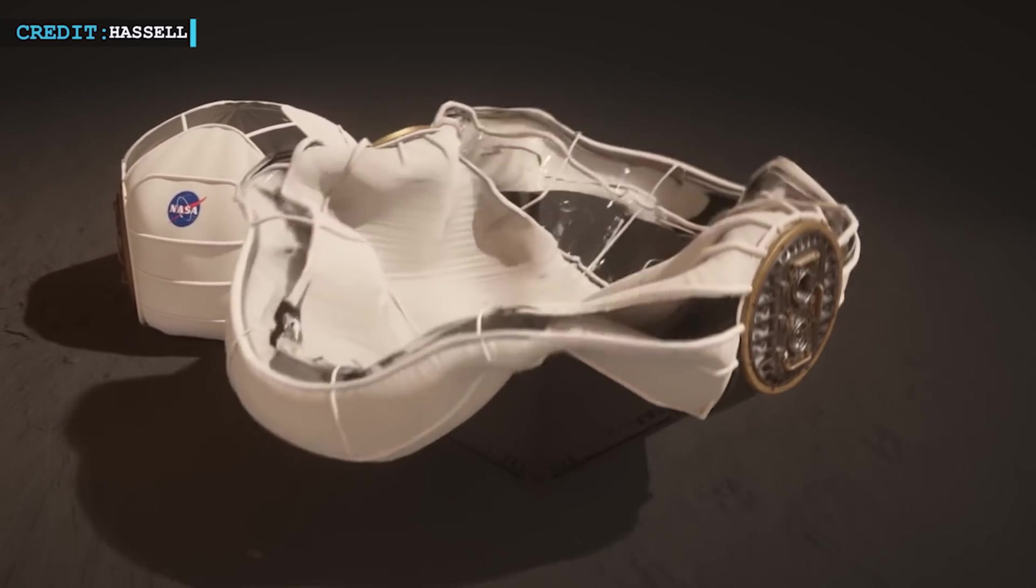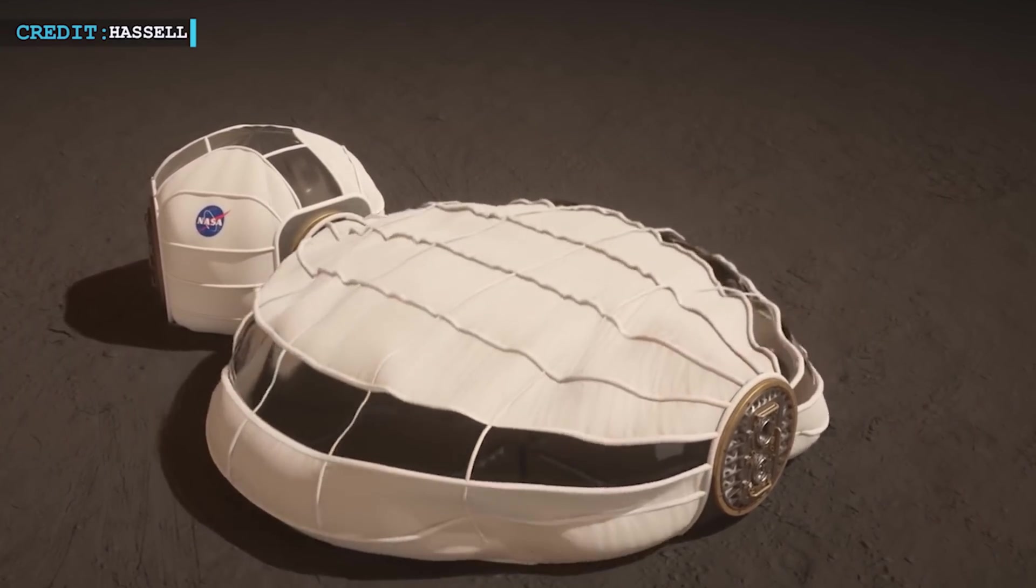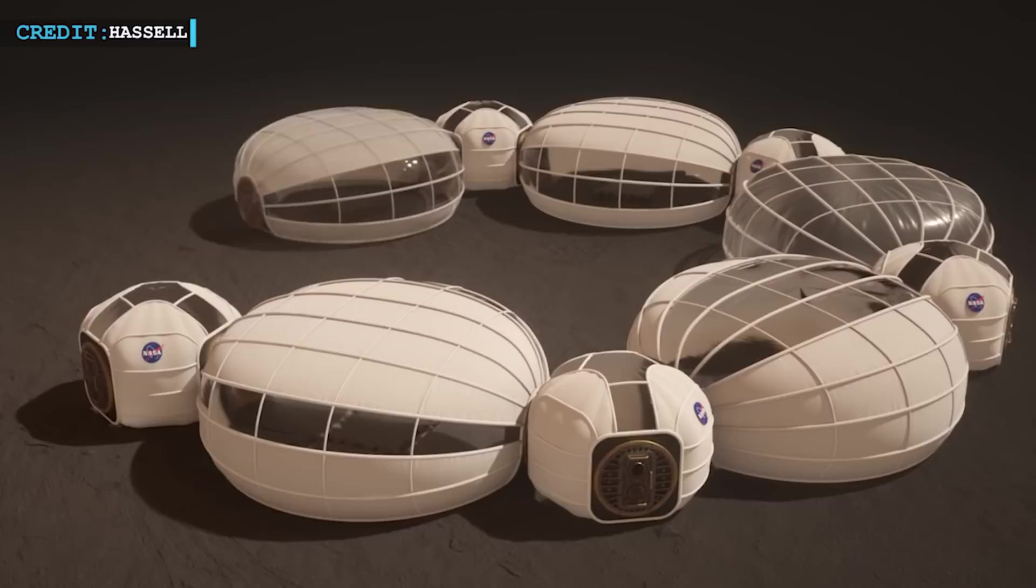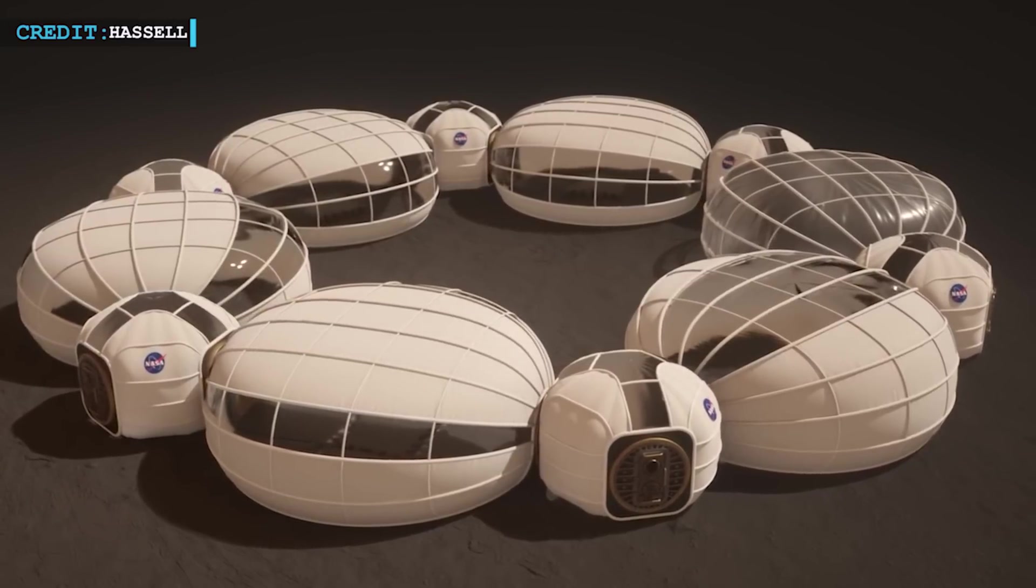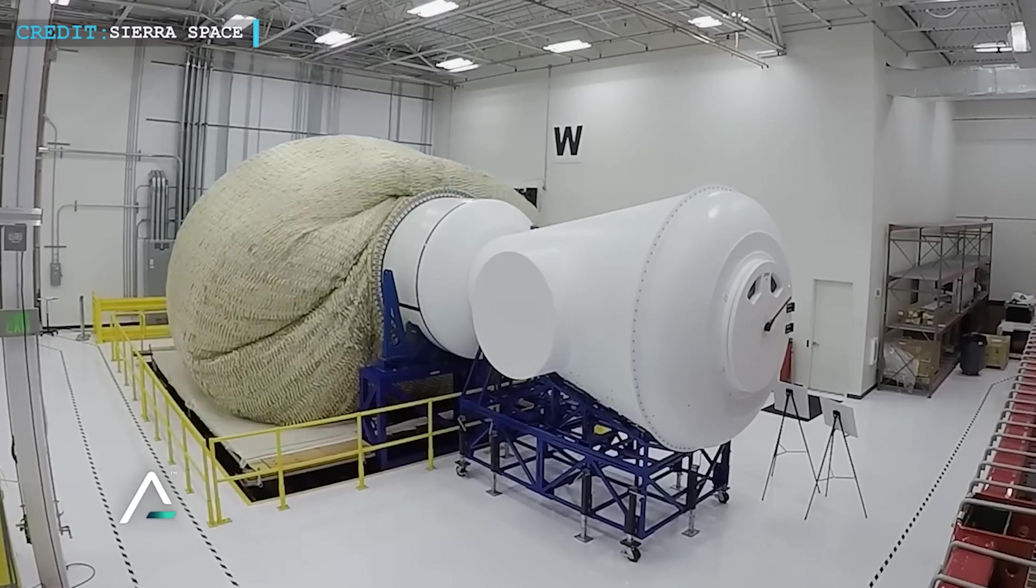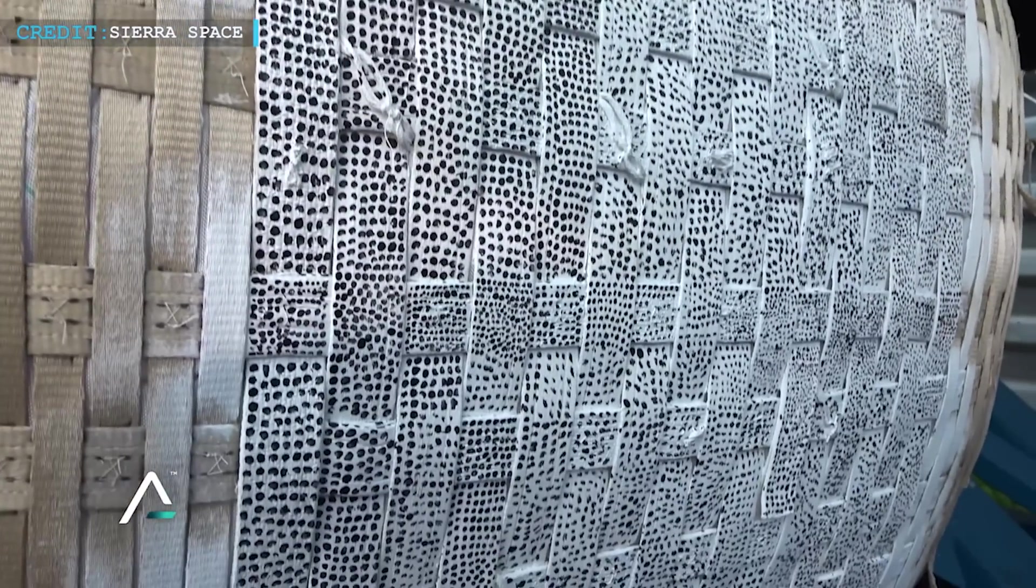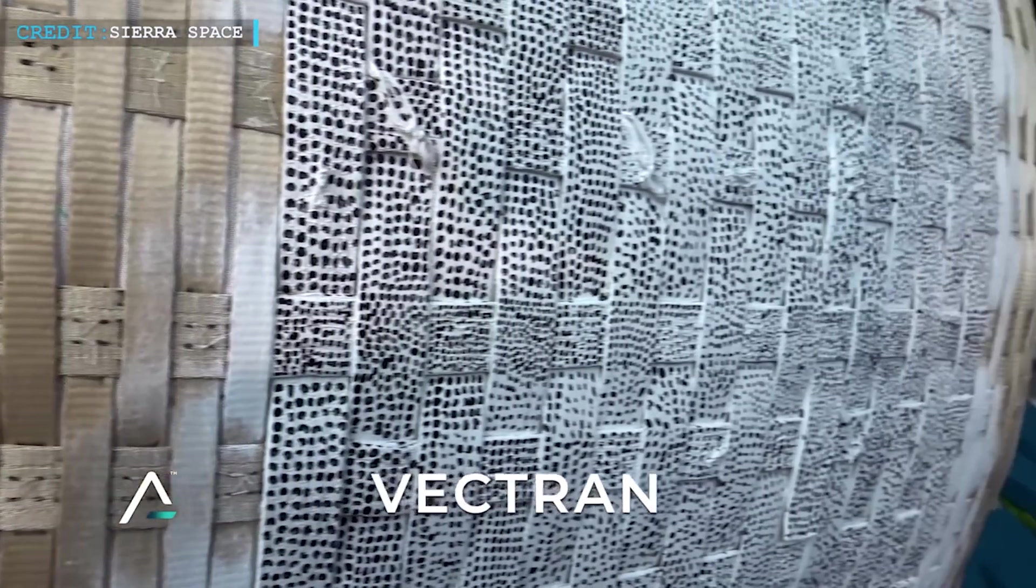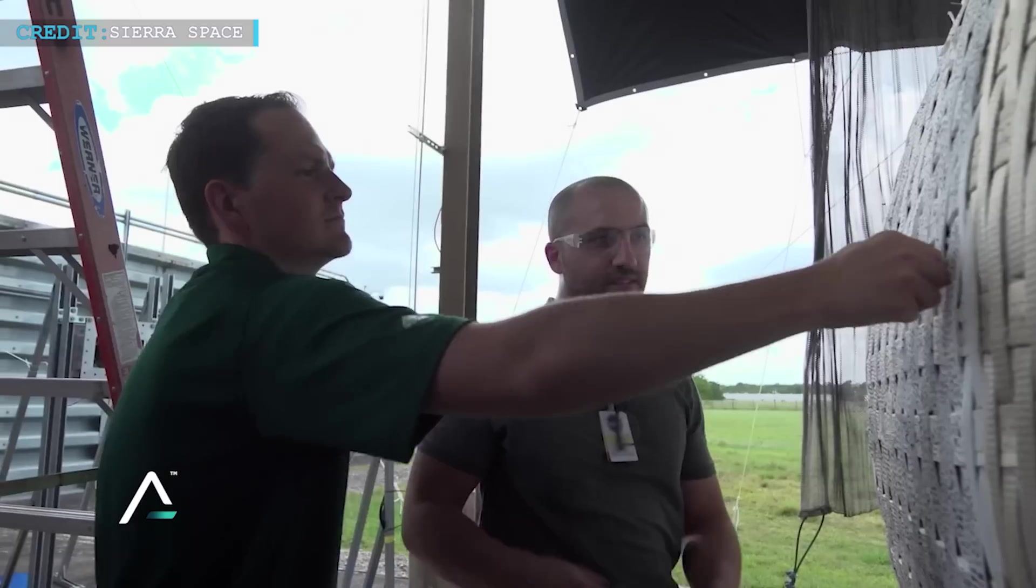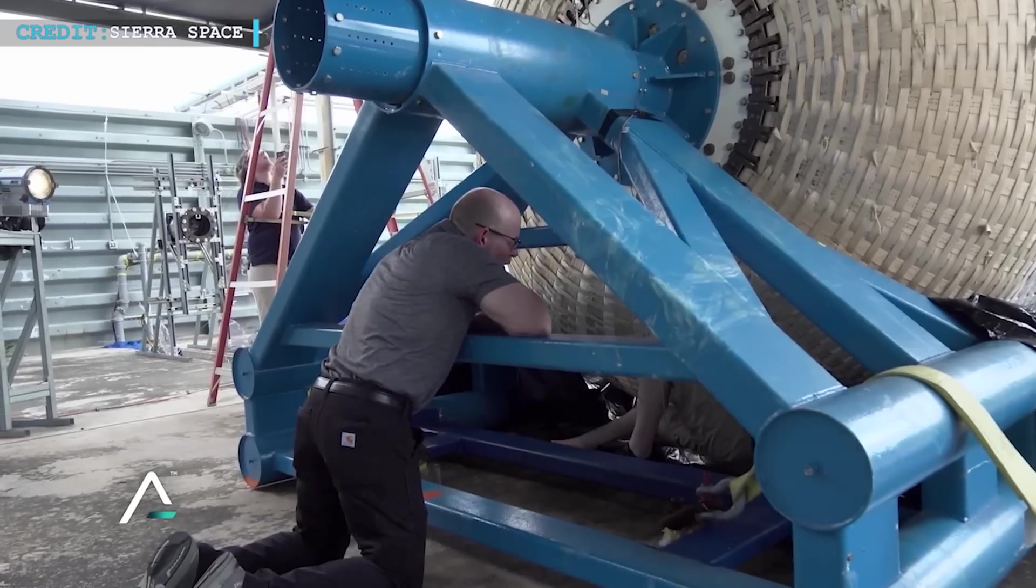One of the most intriguing aspects of inflatable habitats is their versatility. They can function as standalone space stations or be linked together to form larger structures. This flexibility allows for modular expansion, accommodating the evolving needs of a growing Martian colony. The outer shell of these habitats is made of multiple layers of a remarkably tough material called vectrin, which exhibits strength surpassing that of steel when pressurized. Rigorous testing is conducted to ensure their strength and durability, including assessments for overpressure and ballistic impacts.